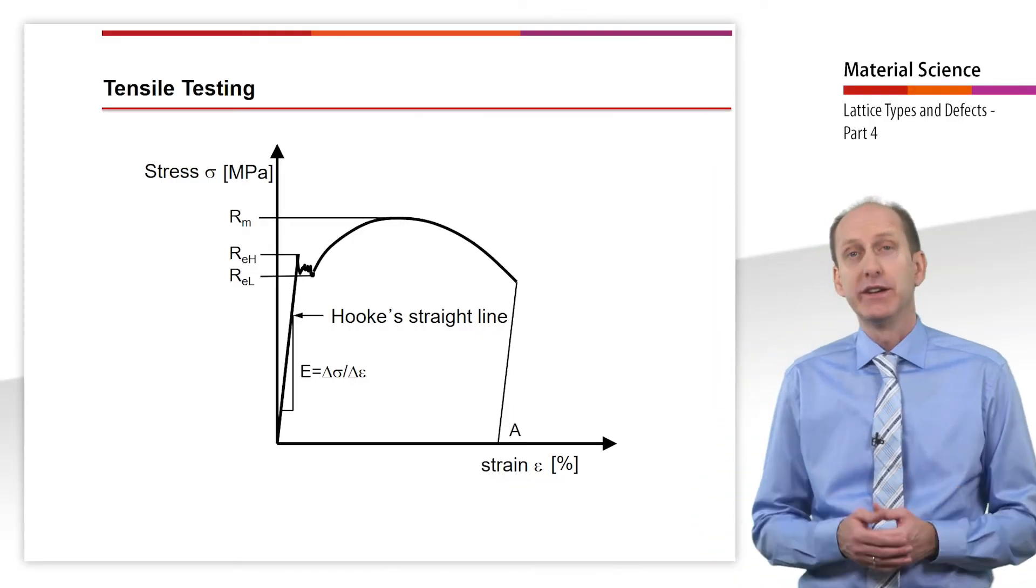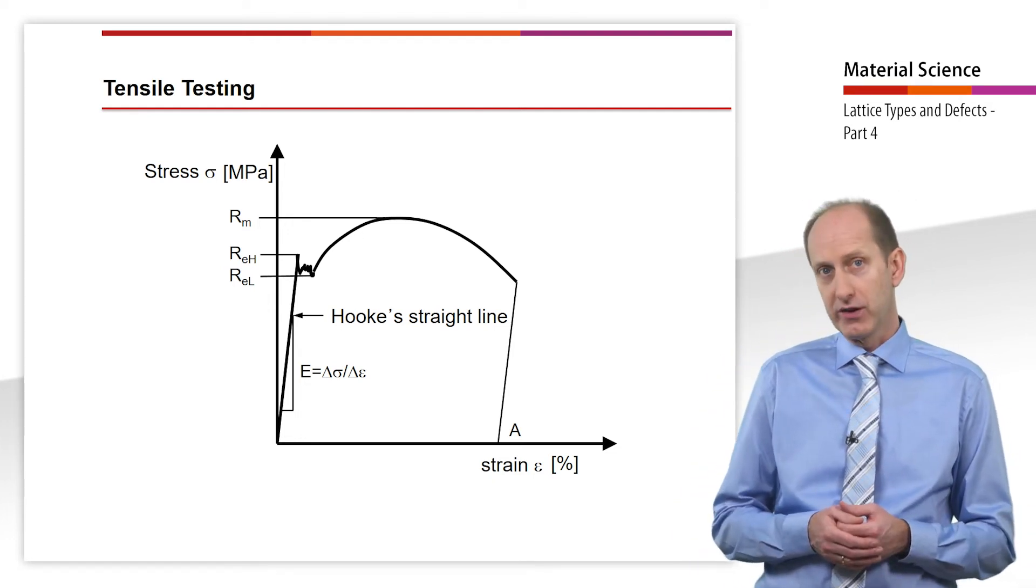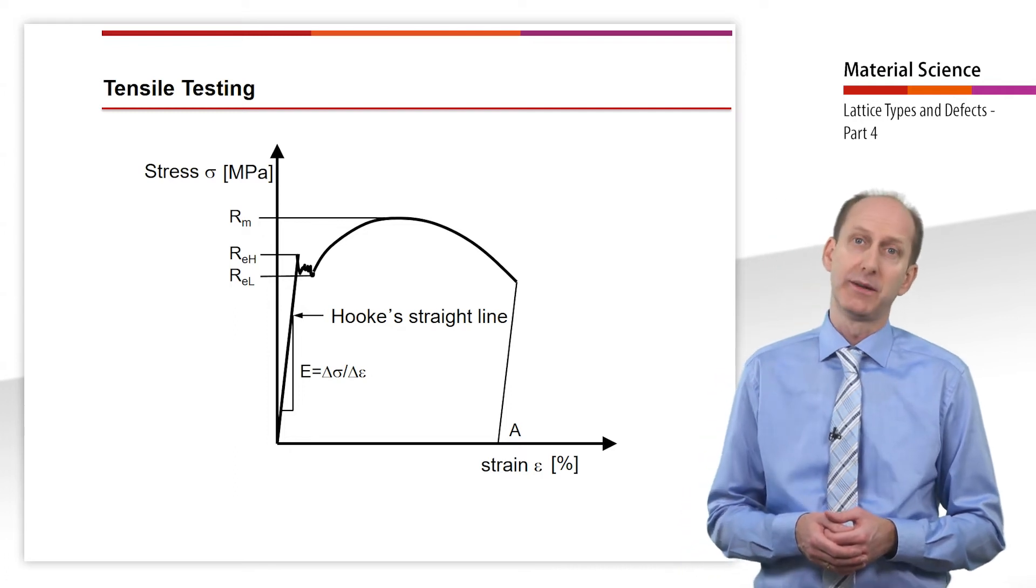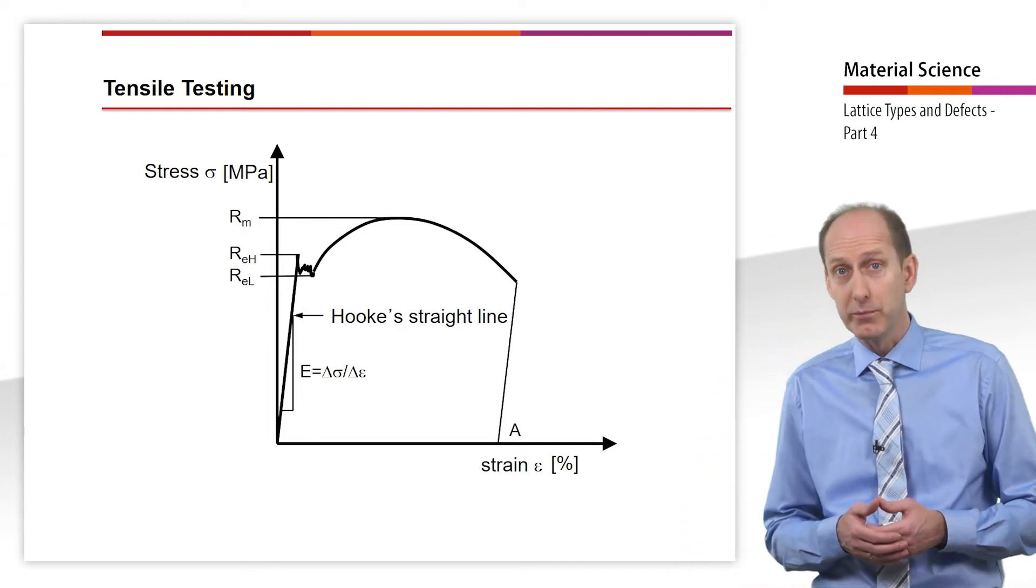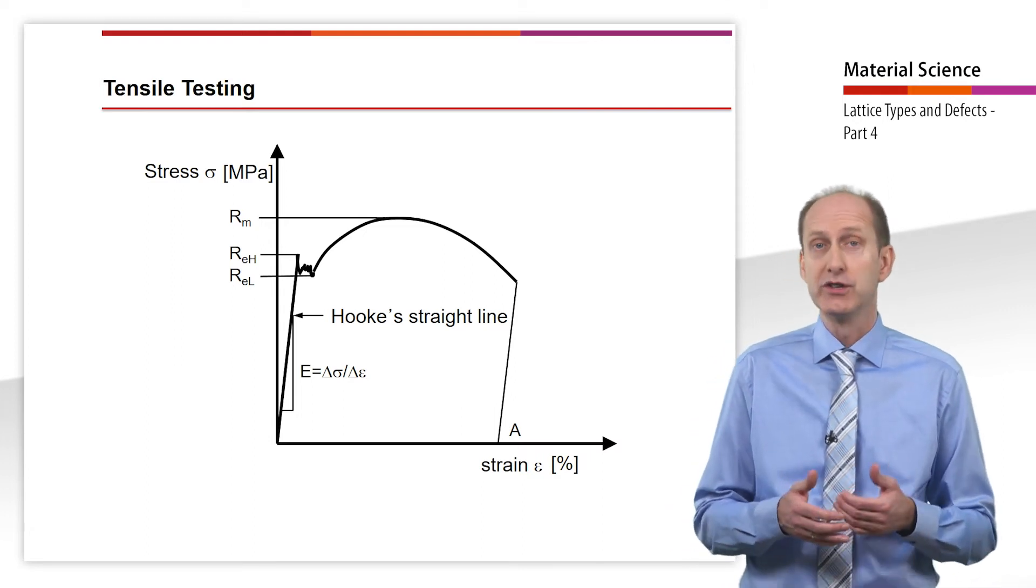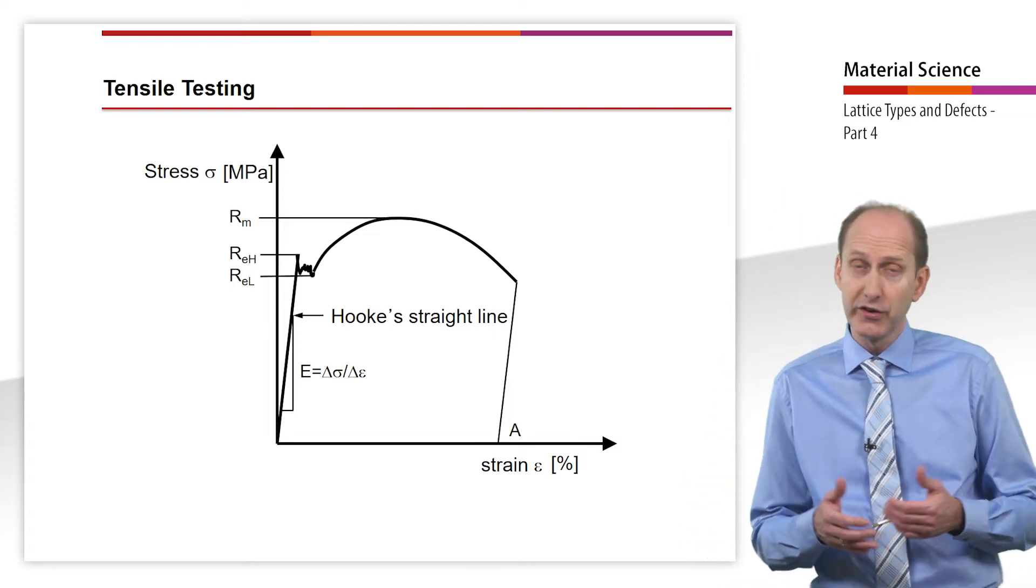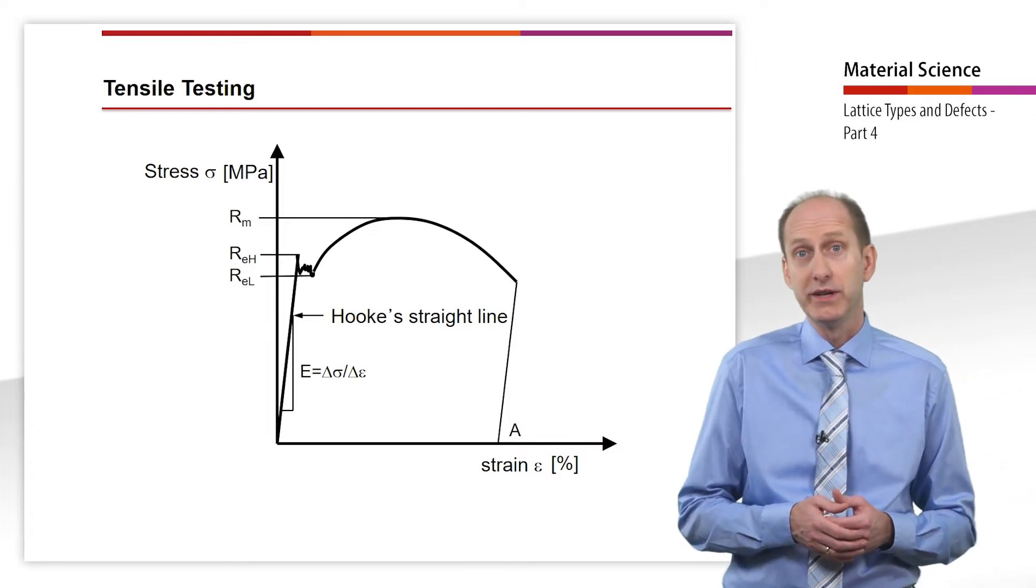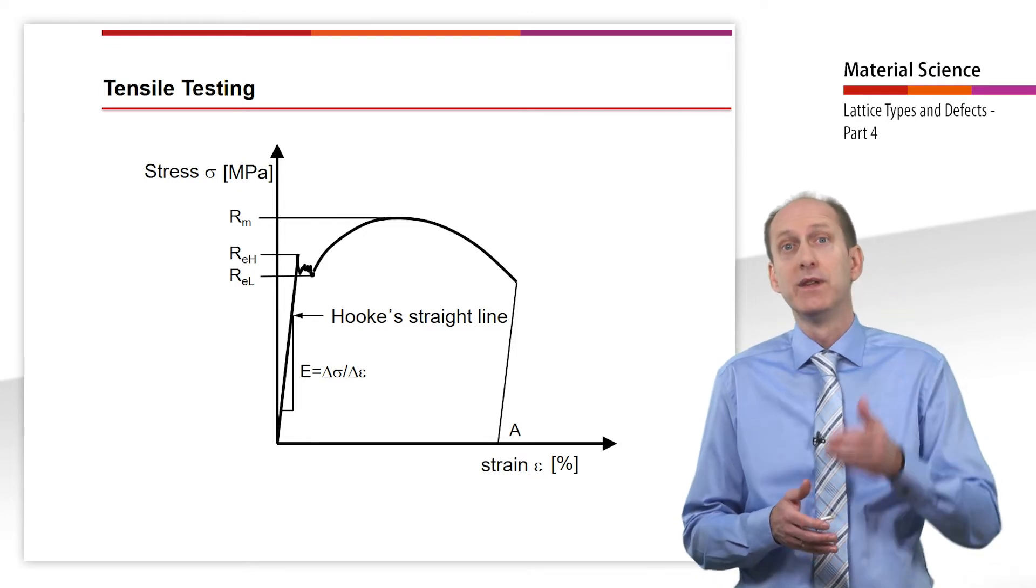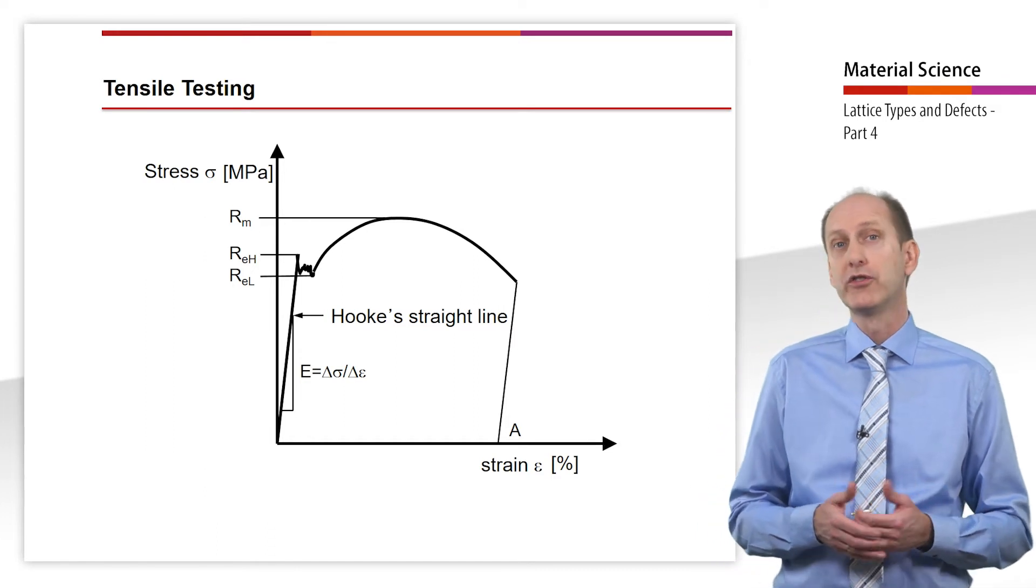If we plot the calculated stress against the strain, we obtain the stress-strain diagram. Under low stress, many materials behave purely elastic. This means that the deformation is reversible and the material returns to its original state when the force is removed. In the stress-strain diagram, this range is depicted as a curve moving up in a straight sloped line in the range of a lower strain, the so-called Hooke's straight line.